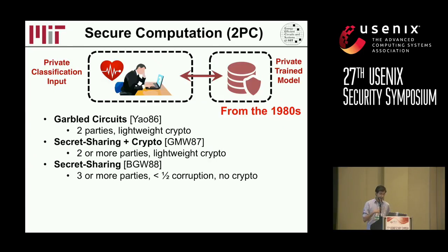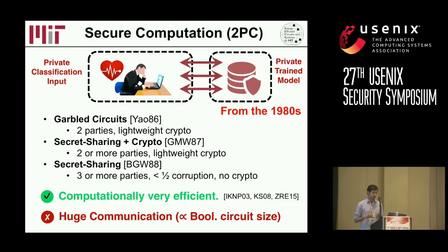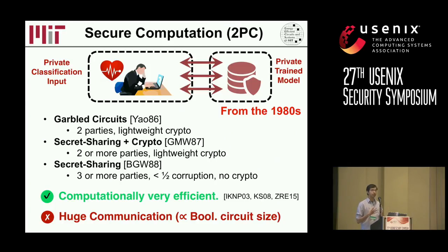If we look at interactive secure computation techniques, we notice they typically use very lightweight cryptography such as symmetric encryption, and as a result they're computationally very efficient. However, the communication cost is very expensive. In a natural setting when you want an image classified, you expect to send only the image to the server. Whereas in these secure computation techniques, the amount of communication tends to be proportional to the size of the entire computation, which is much higher than the size of the image itself.